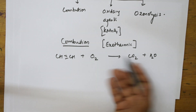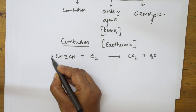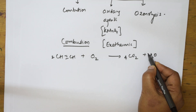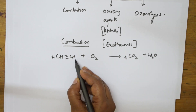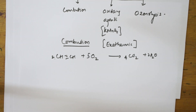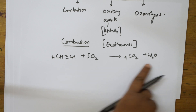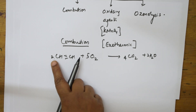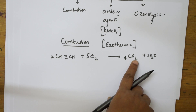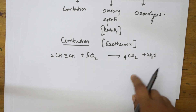Let us balance this combustion equation. If I take 2 moles of the alkyne with 4 carbons and 2 hydrogens each, the oxygen required is 5. Taking 2 moles: 4 carbons give 4 CO₂, 4 hydrogens give 2 H₂O, and oxygen balance is 4 times 2 plus 2 equals 10, so 5 O₂. This is your balanced combustion reaction.